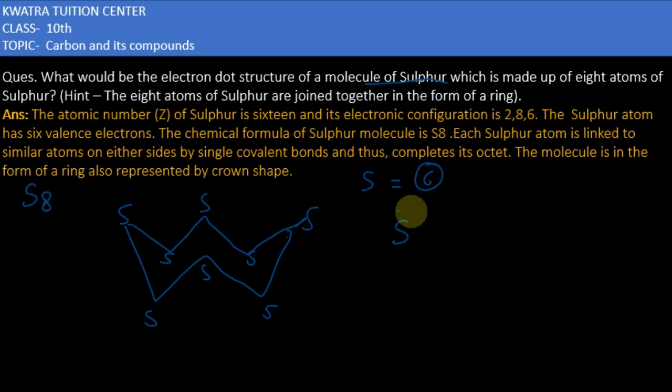Drawing the six valence electrons around each sulfur atom in the ring: 1, 2, 3, 4, 5, 6 for the first sulfur. And here 1, 2, 3, 4, 5, 6, repeating this pattern around each sulfur atom.